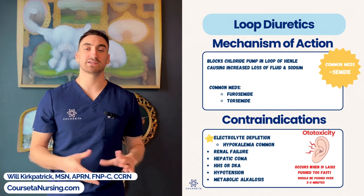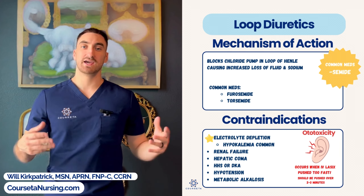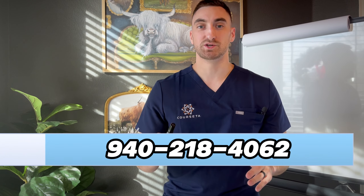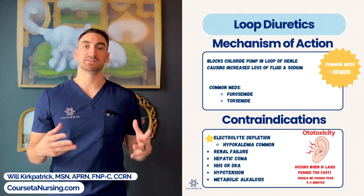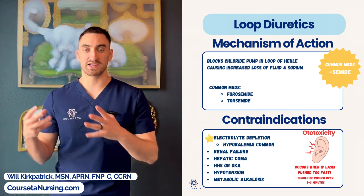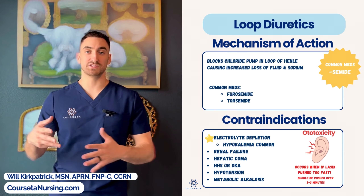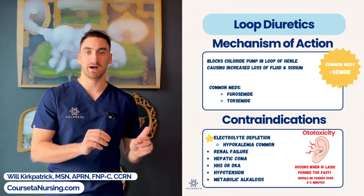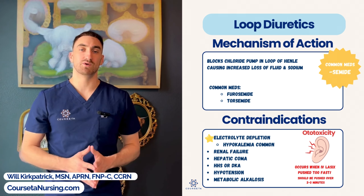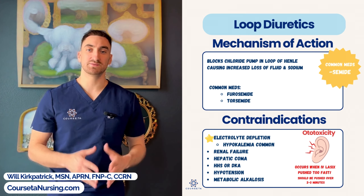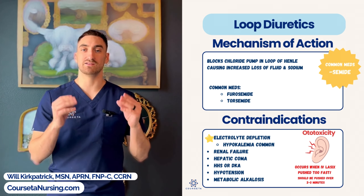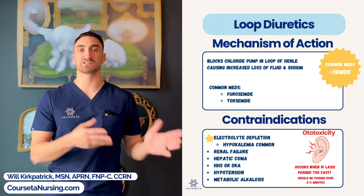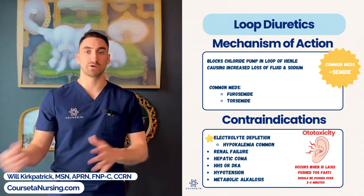Loop diuretics are one of the most commonly talked about and commonly used diuretics in the hospital setting. They're specifically used to remove fluid in a rapid and extensive way, and can also be used for hypertension related to fluid overload. Patients who have heart failure or peripheral edema — loop diuretics are for you. The common suffix is '-semide' (S-E-M-I-D-E). They're called loop diuretics because they block sodium and water resorption in the loop of Henle. Common medications include furosemide and torsemide.